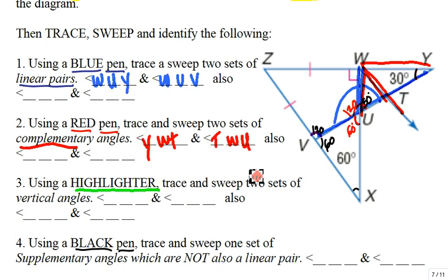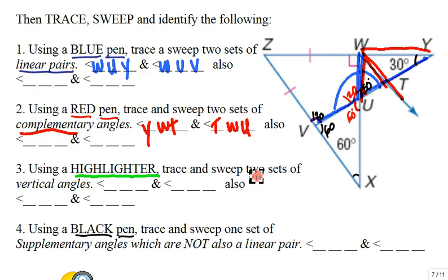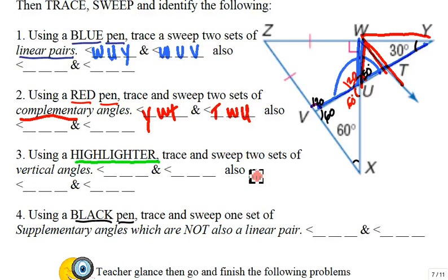Trace and sweep vertical angles. I actually already swept one vertical angle for you. And then you have this last angle, trace and sweep, in black pen, one set of supplementary angles which are not a linear pair. You're going to have to find those last two on your own.